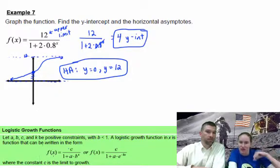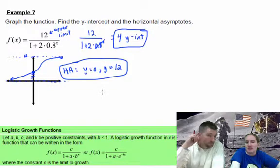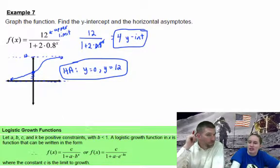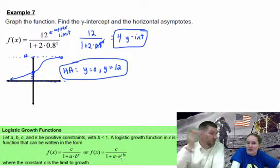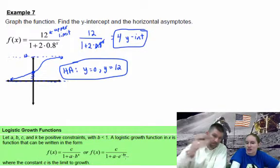So, here's a little box that has some info about logistic growth functions. All of these things, A, B, C, and K, are positive constants where B is less than 1. A logistic growth function in x can be written in this form that we have here. And so, they said B is less than 1. So, if you have a number like we did, 0.8, that's less than 1. But they could put an e in there instead, which is bigger than 1. So, you have to account for the bigger than 1 by putting a negative in the exponent.